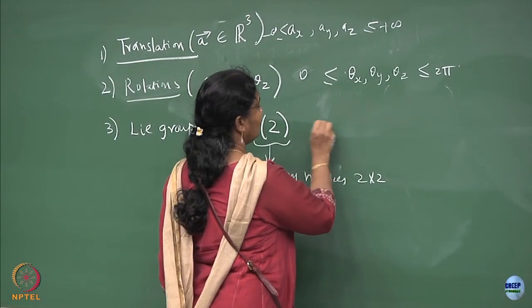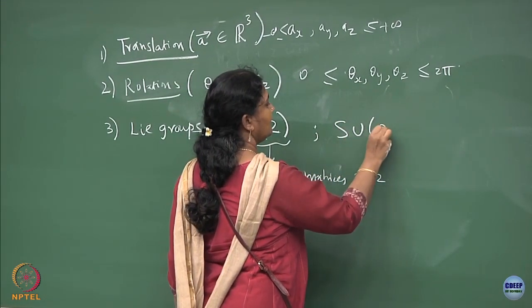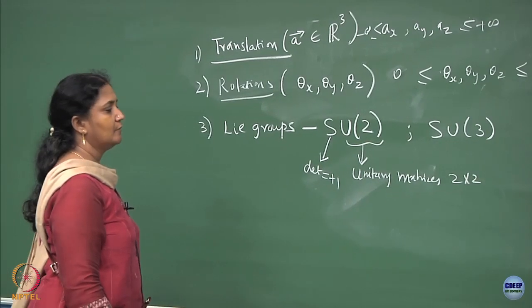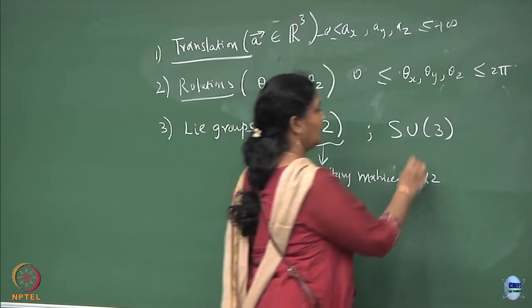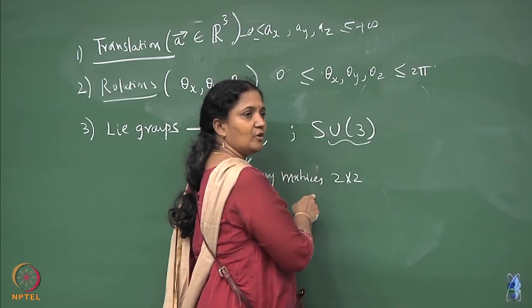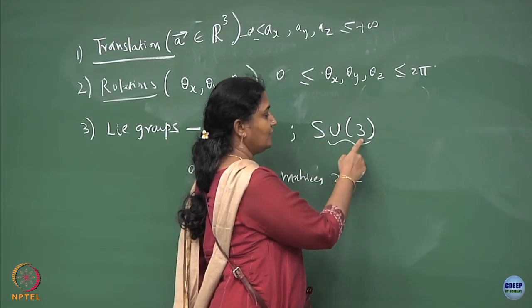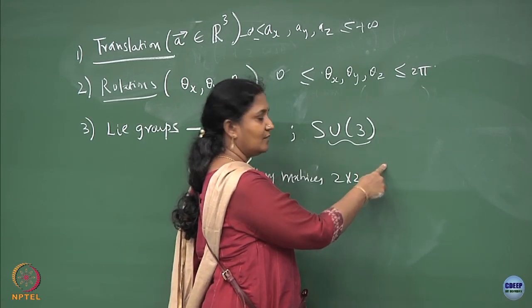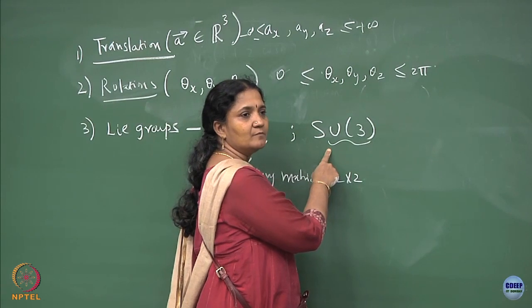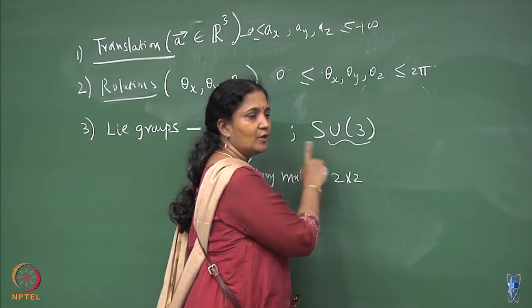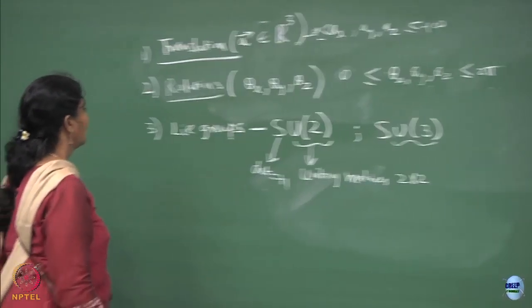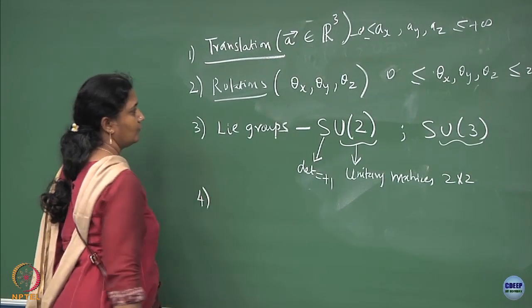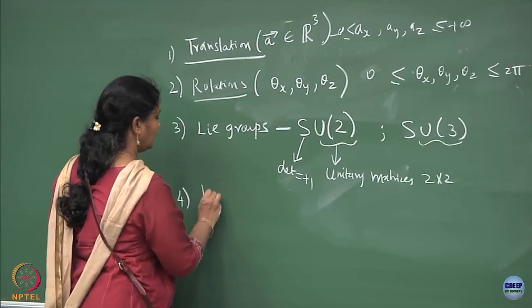Next, SU(3) uses the same notation: the lowest non-trivial dimension is 3×3 unitary matrices with determinant +1. After that, we will get on to Lorentz transformations.